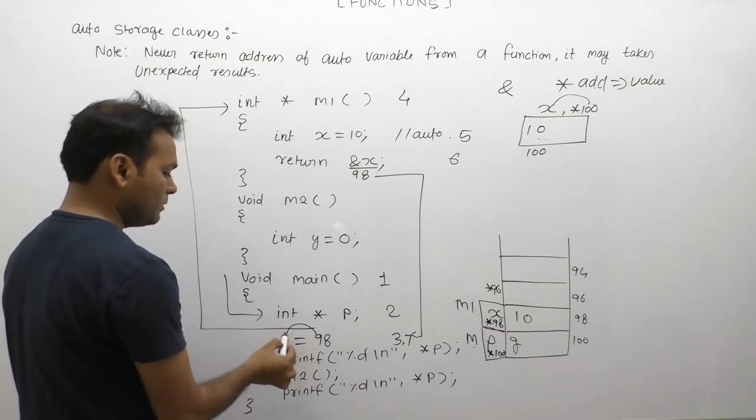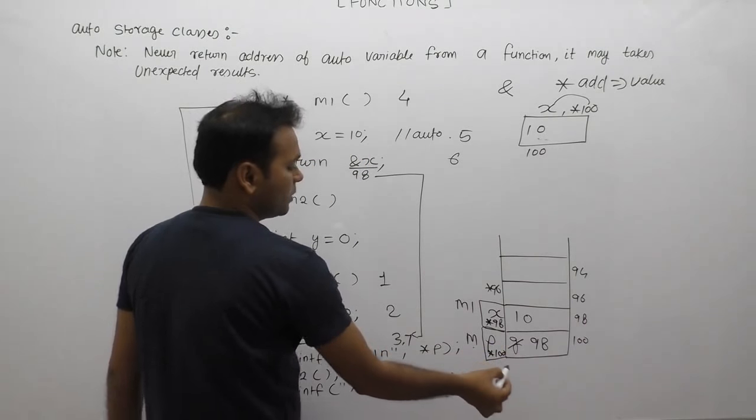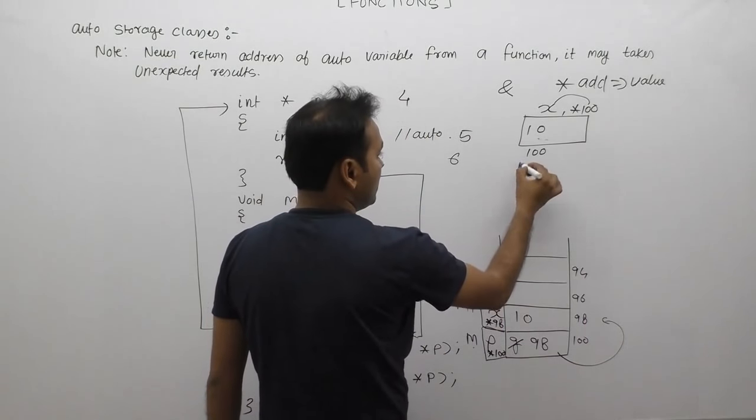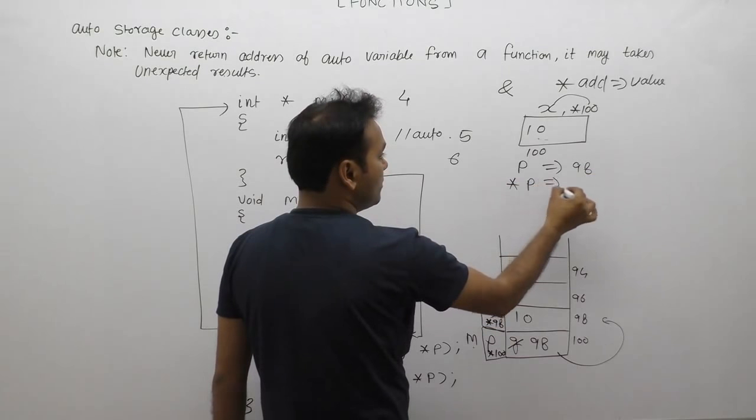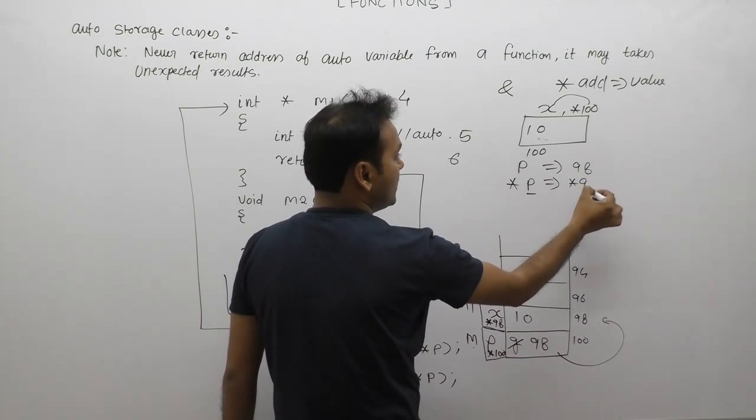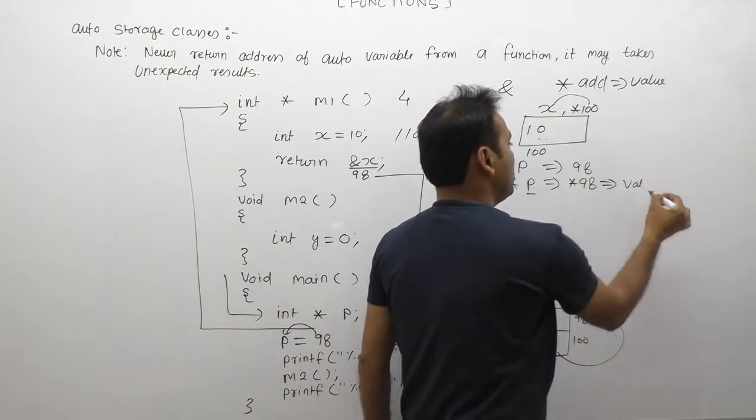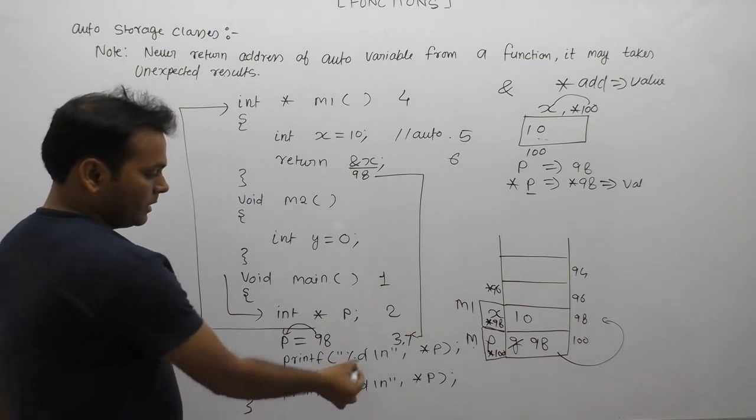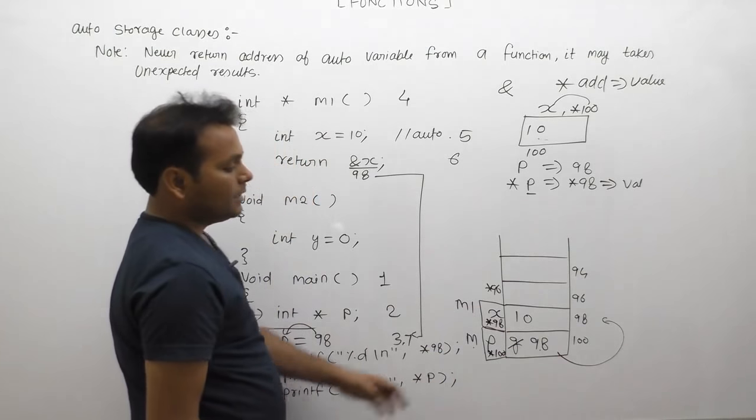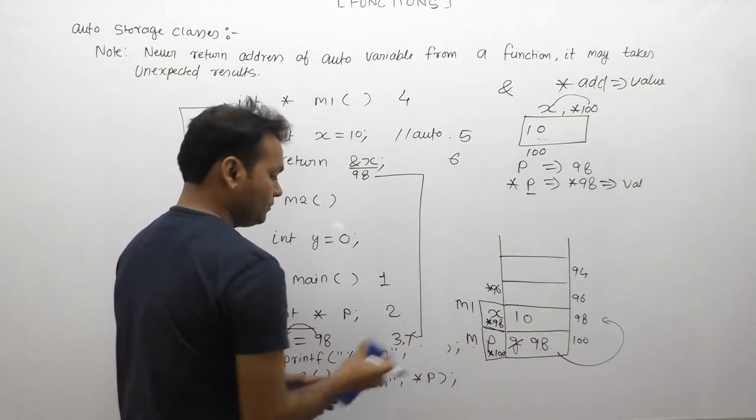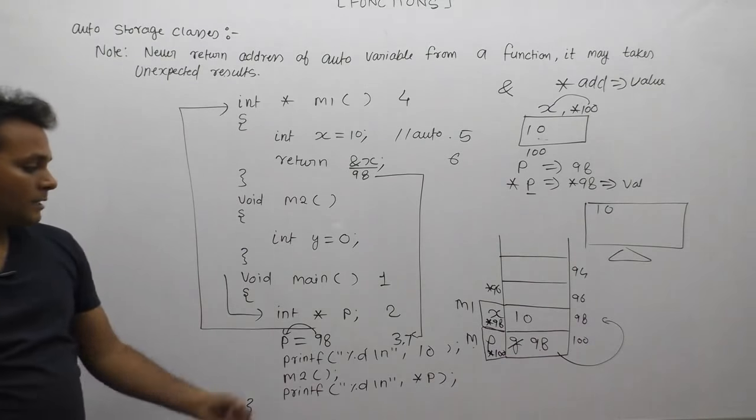Seventh case: at calling place, m1's return value 98 is assigned to variable p. P gets 98. P's location points to address 98. Star p means value at p's location, which is 98. Star p is similar to star 98. Star operator returns value of 98 location, which is 10. Print statement displays star p, which returns 10. Output displays 10. Currently star p returns 10.